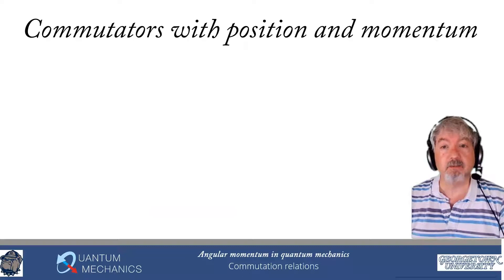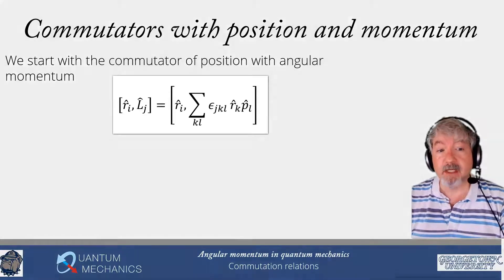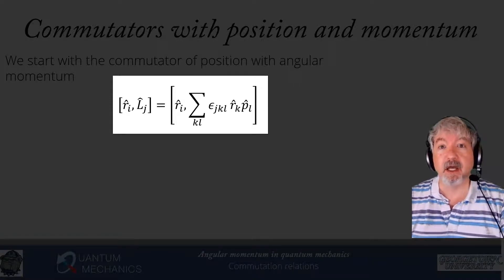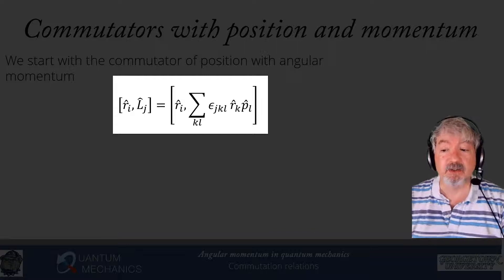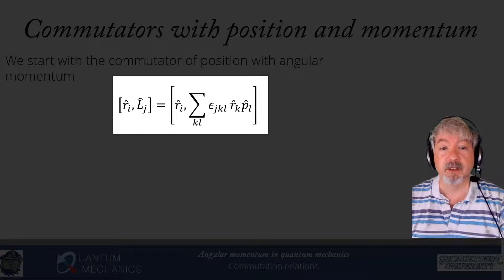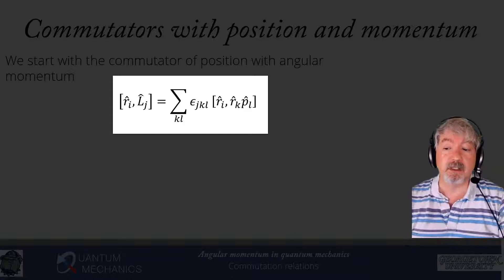Let's work out the commutators of position and momentum with angular momentum. We write out Lj as the sum over k and l of epsilon_jkl times rk*pl, using the Levi-Civita fully antisymmetric tensor to represent the cross product. We substitute that in, then pull the summation and the tensor out of the commutator because those are just numbers, and then we apply the Leibniz rule.